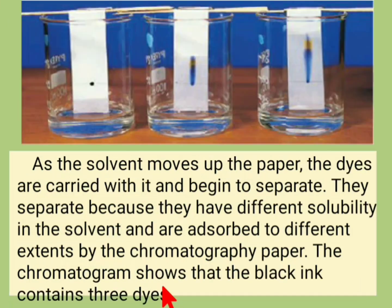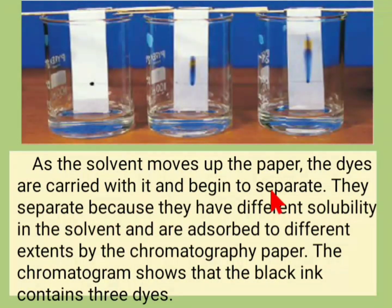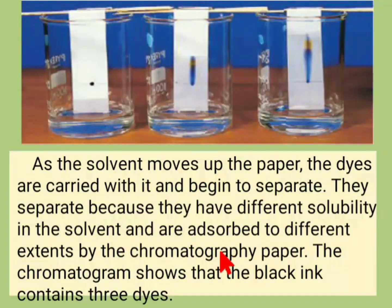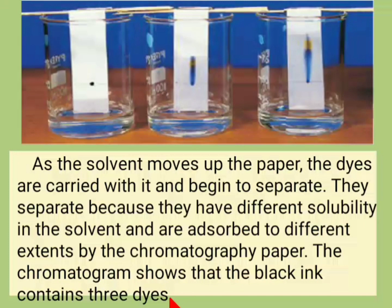The black ink separates into its constituent dyes as the solvent moves up the paper. The dyes are carried with it and begin to separate because they have different solubilities in the solvent and are adsorbed to different extents by the chromatography paper. The chromatogram shows that black ink contains three dyes. This is the explanation of paper chromatography.